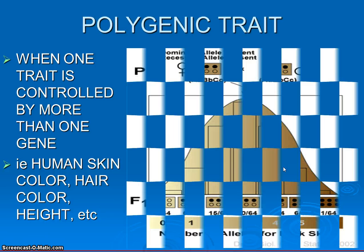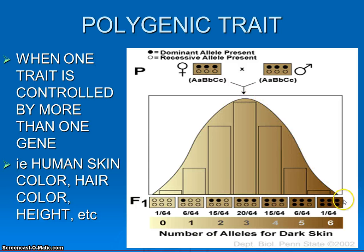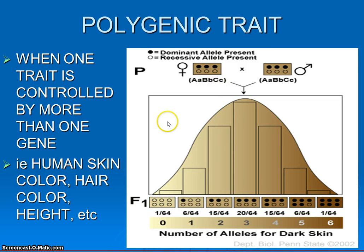So if we look at an example in the figure here, we can see the P generation — a female and a male. For this trait we're looking at skin color. There's a wide range of skin colors ranging from albino to very, very dark pigmentation and everything in between. Notice this infamous bell curve — just like in grades, A's, B's, C's, D's, and F's — and also skin pigmentation. A few people at both ends of the spectrum and a very wide range with a high number of people towards the middle.